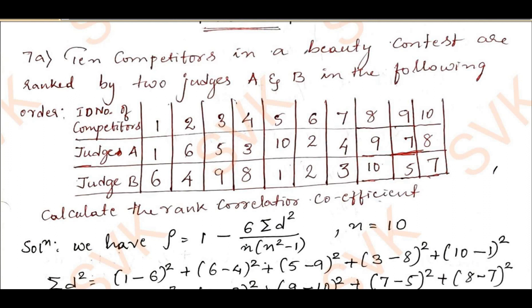So, 10 competitors in a beauty contest are ranked by two judges A and B in the following order — they are given in the tabulation. The competitor ID numbers are 1 to 10, with ranks given by judge A and judge B. We need to calculate the rank correlation coefficient, which means we need to find rho for this problem.